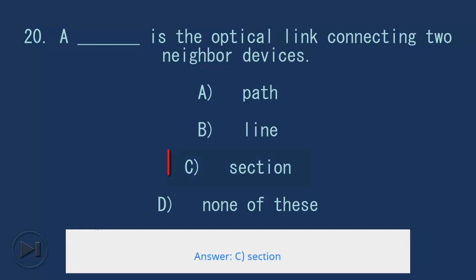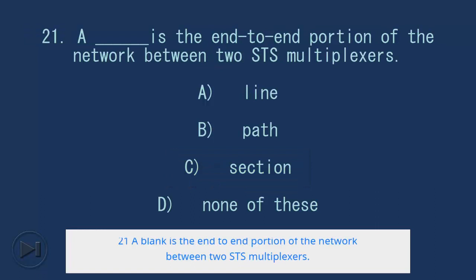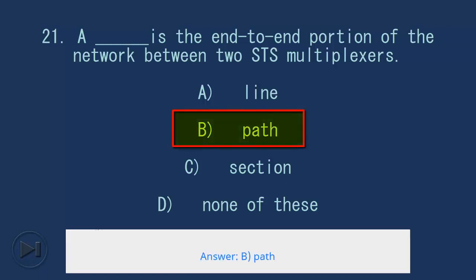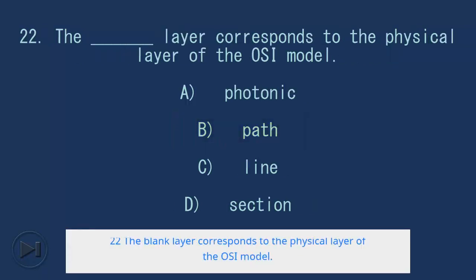21. A blank is the end-to-end portion of the network between two STS multiplexers. A. Line, B. Path, C. Section, D. None of these. Answer: B. Path.